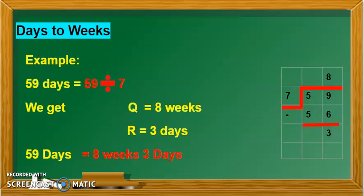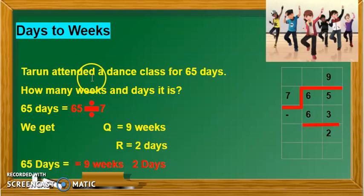Now let us see one more example. Tarun attended dance classes for 65 days. How many weeks and days is it? So 65 divided by seven. Seven outside and 65 inside.